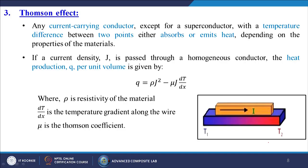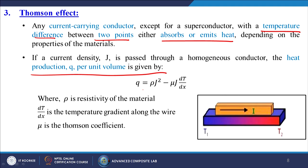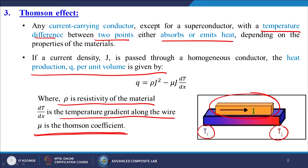The third one is the Thomson effect. Any current-carrying conductor — except a superconductor — with a temperature difference between two points either absorbs or emits heat depending on the properties of the materials. If a current density j is passed through a homogeneous conductor, the heat production q per unit volume is given by q = ρj² − μj(dT/dx), where ρ is the resistivity of the material, dT/dx is the temperature gradient along the wire, and μ is the Thomson coefficient.